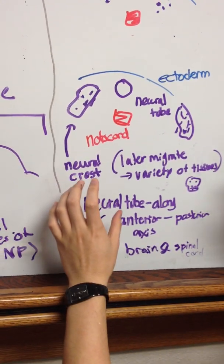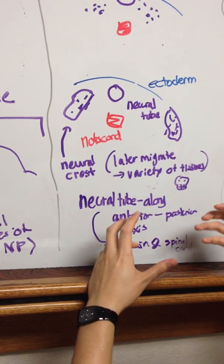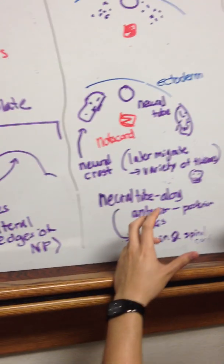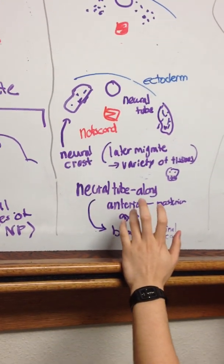The neural crests are structures that later migrate and form a variety of tissues, such as skull fragments or teeth. The neural tube will form along the anterior or posterior axis.